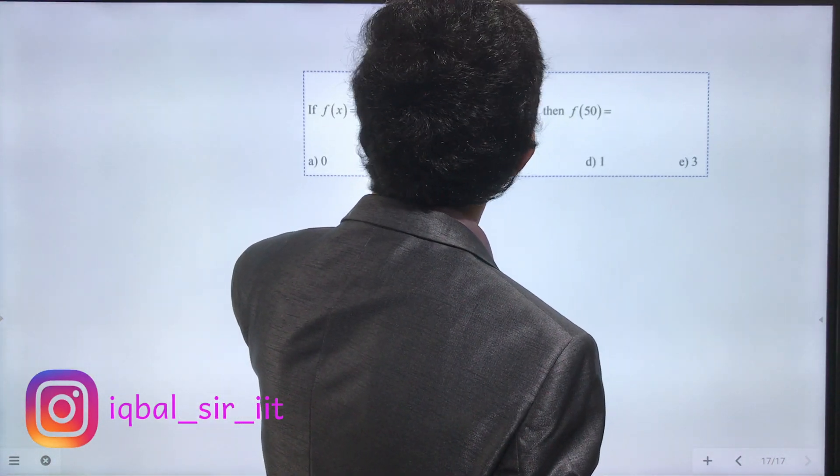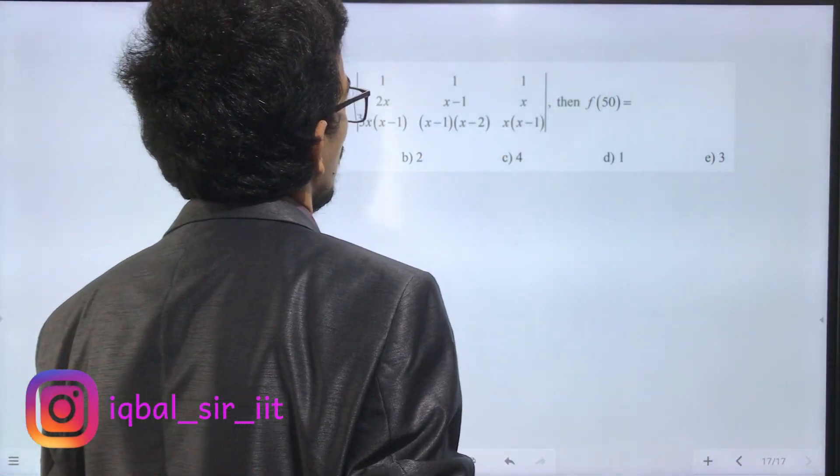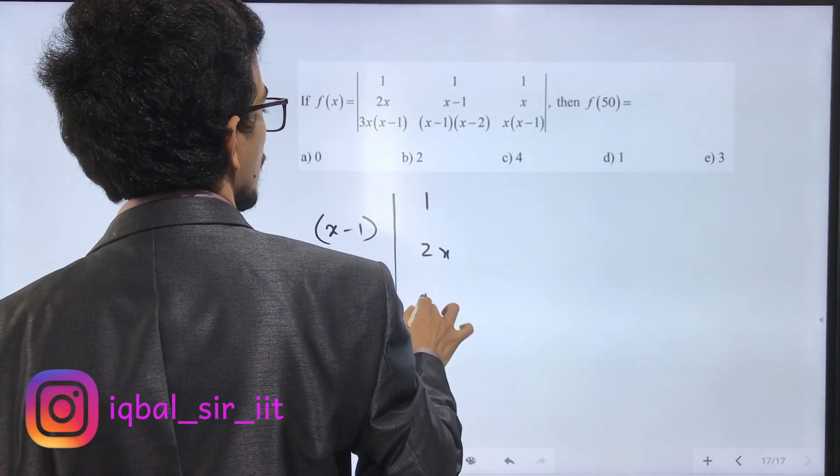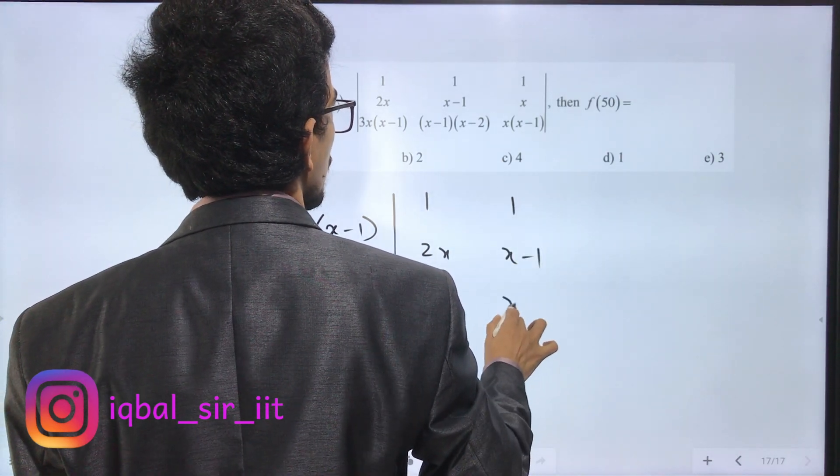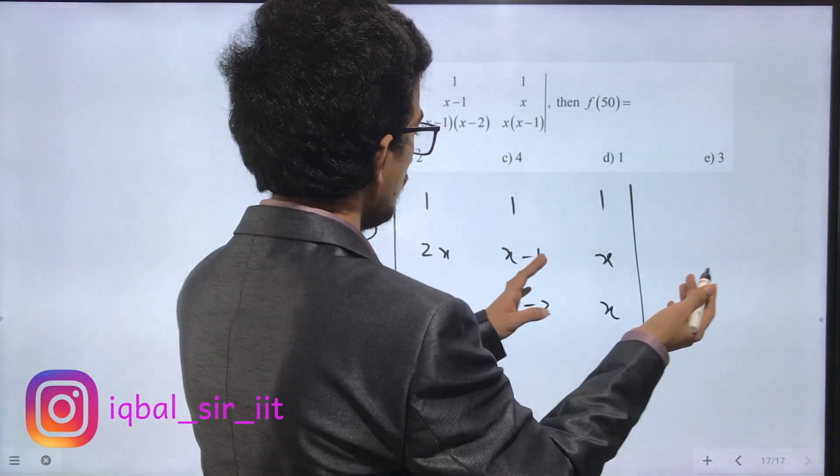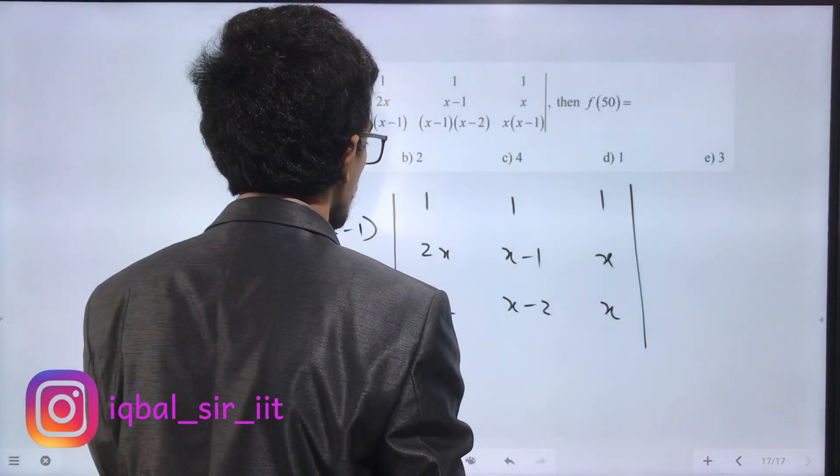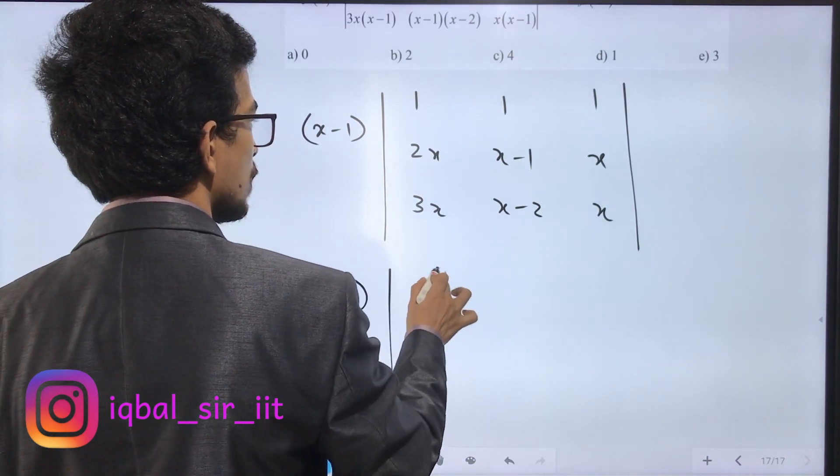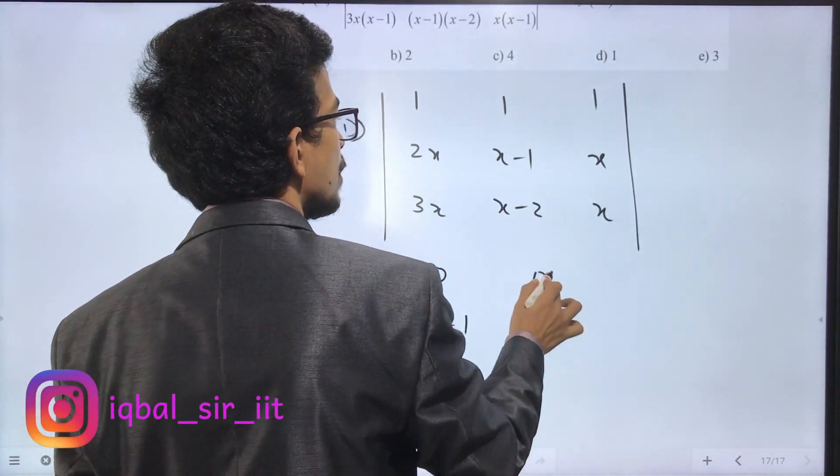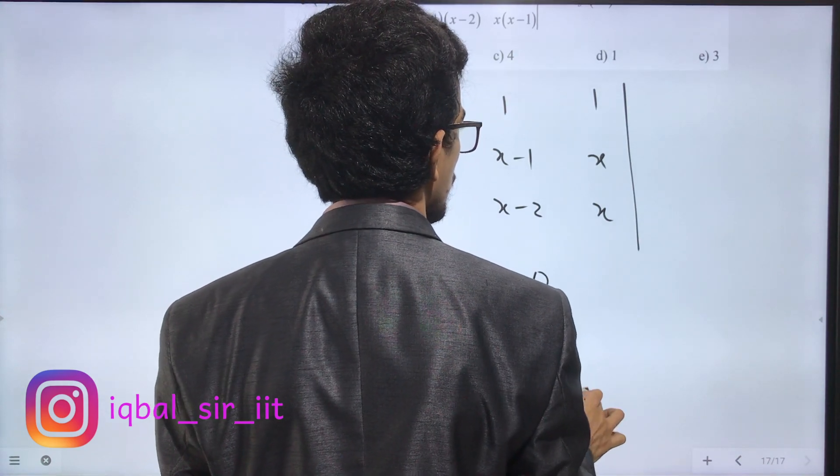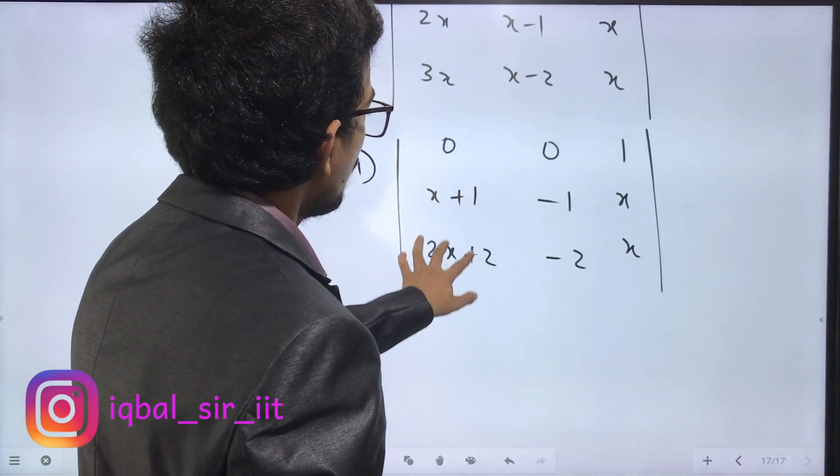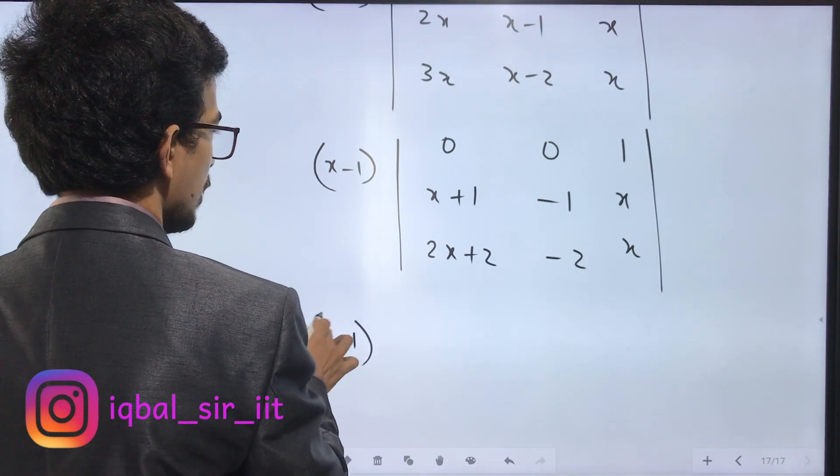For problem 94, f(x) is defined with a determinant. Apply c1 = c1 - c2 and c2 = c2 - c3. Then f(x) becomes the determinant with entries [0, x+1, 2x+2] in first row, [0, -1, -2] in second row, and [1, x, x] in third row. Expanding using the first column, we get (x+1)(-1) - (-2) times the determinant.